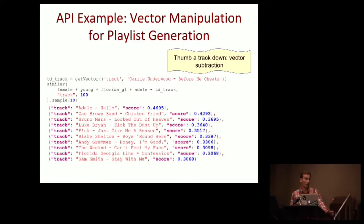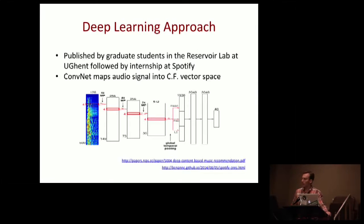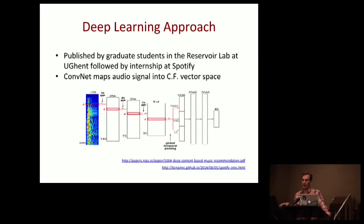Now I'll change gears and talk about another vector space we've been working on: our acoustic modeling vector space. It's based on a deep learning model published by a graduate student at UGent who did an internship at Spotify and wrote up great results. Briefly, he takes the audio representation as a spectrogram and uses a deep neural network to map that into the vector space of users and tracks — essentially taking a track and mapping it into the collaborative filtering vector space we just discussed.